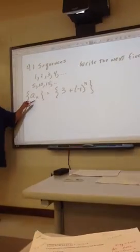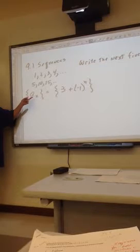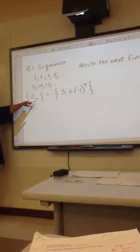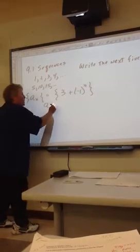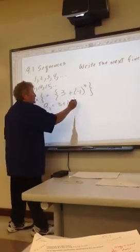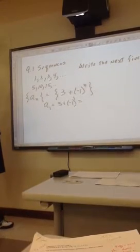We use subscripts to help us distinguish the first term, second term, third term. But you can get the terms themselves by substituting the subscript into the formula. So, for example, a sub 1 here is 3 plus negative 1 to the first, which would give us 2.